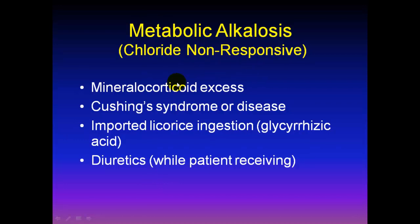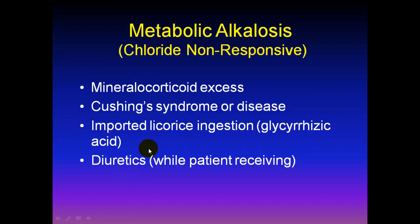Chloride non-responsive metabolic alkalosis tends to involve renal and endocrine mechanisms. Excess mineralocorticoid intake or production — as in Cushing's syndrome or Cushing's disease — can cause this. Imported licorice contains glycyrrhizic acid, a congener of aldosterone. While on diuretics, the urine chloride is high. These conditions are renal-based endocrinopathies and all have urine chloride above 20.